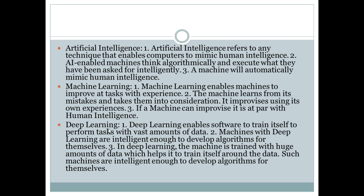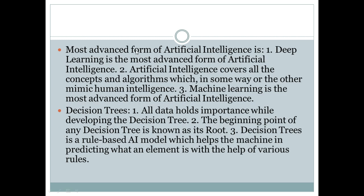Deep learning involves neural networks, and the neural networks are functioning on the basis of how a human neuron works. The most advanced form of artificial intelligence is deep learning. Artificial intelligence covers all the concepts and algorithms which in some way or the other mimic human intelligence.